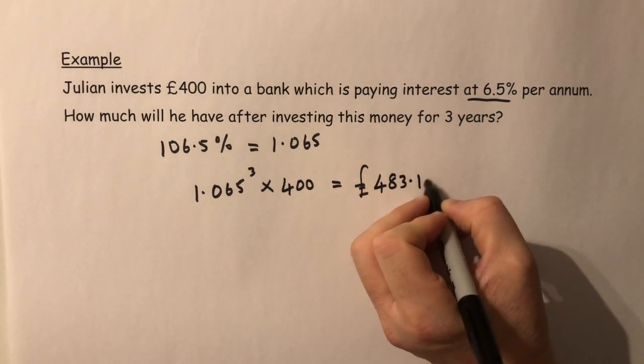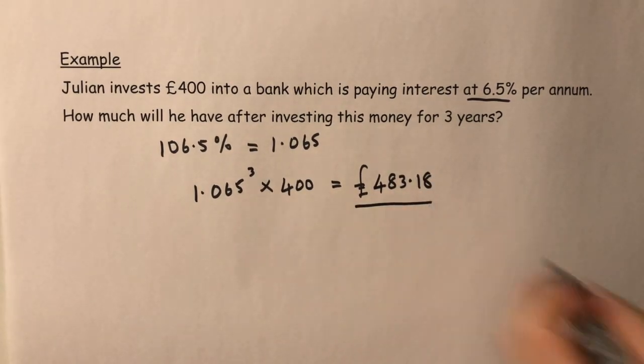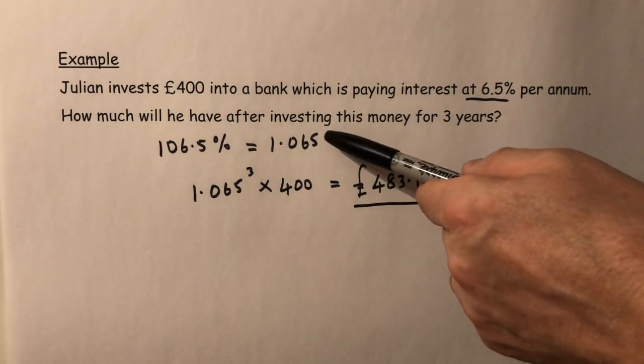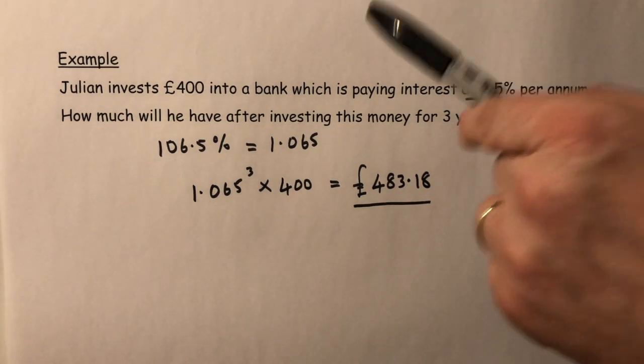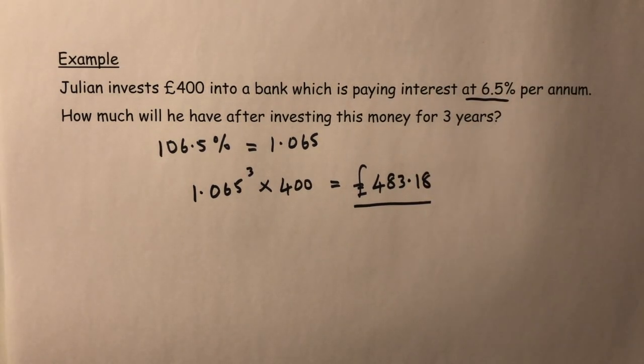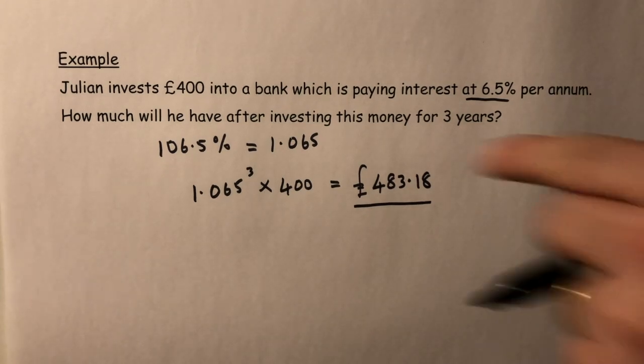Alternatively, you can do as I said: times that by 400, answer comes out. Times that by that, second answer comes out. Times that by that answer, and that answer would come out. A bit more long-winded than what I've shown you there.